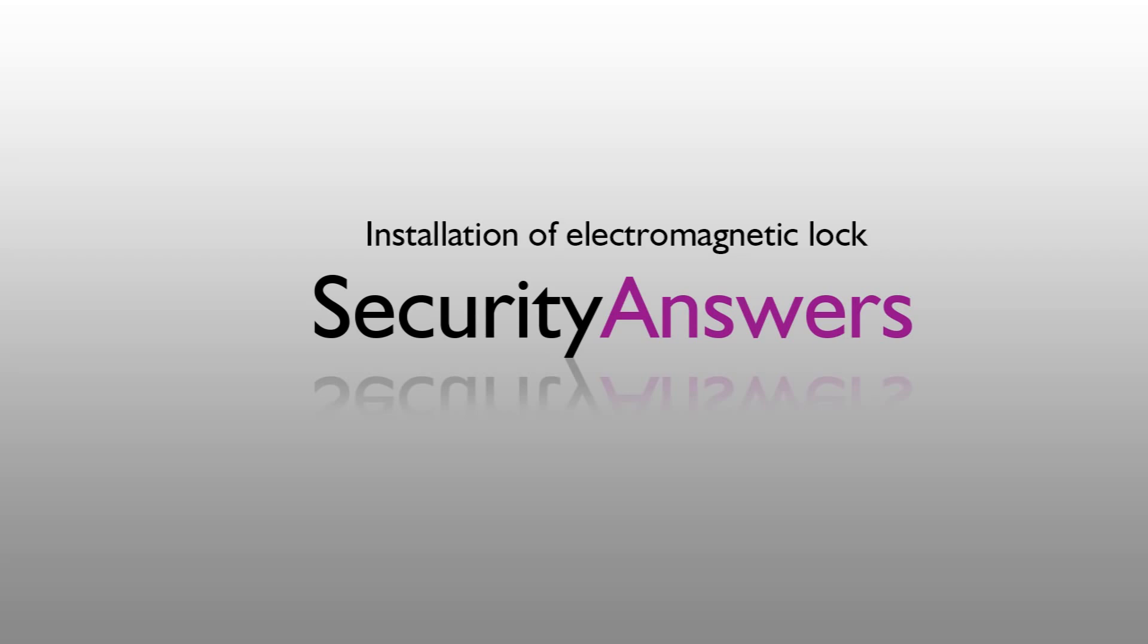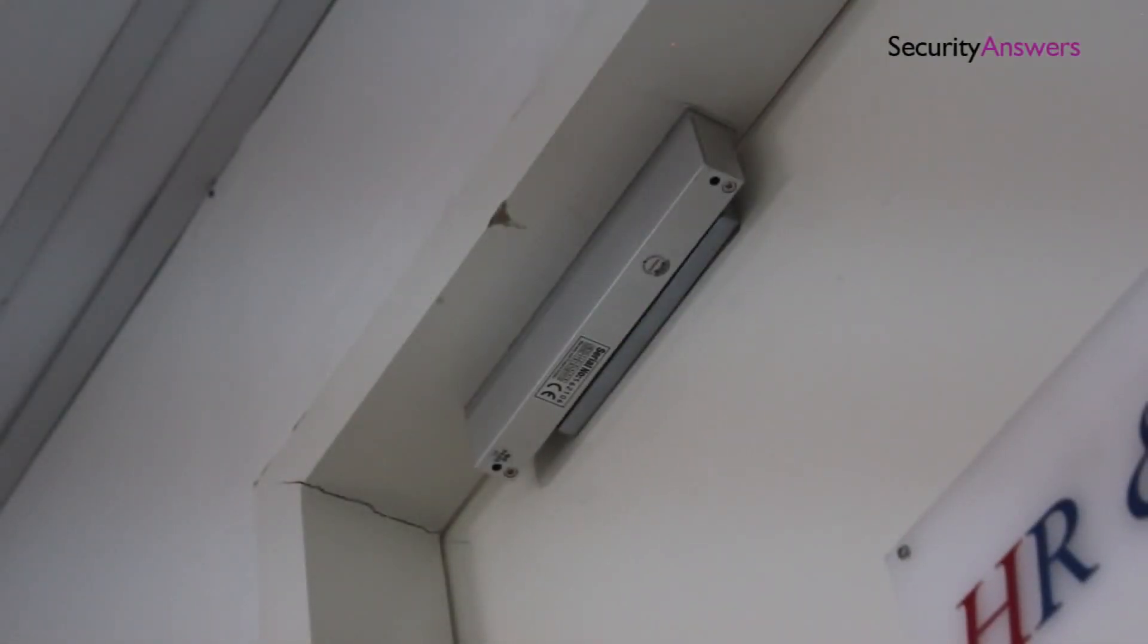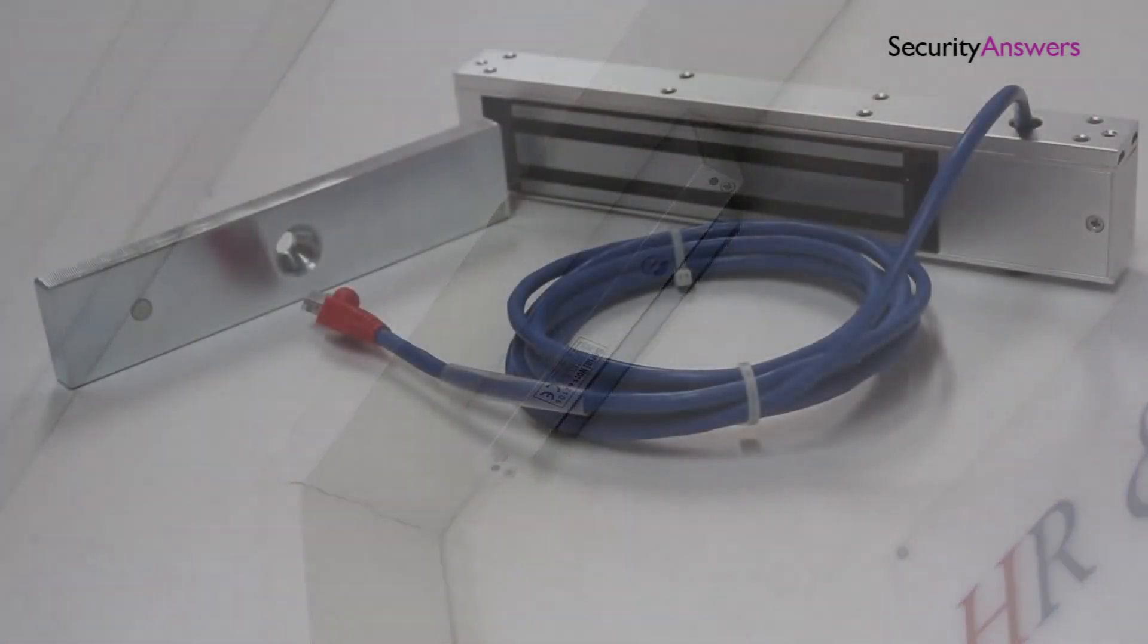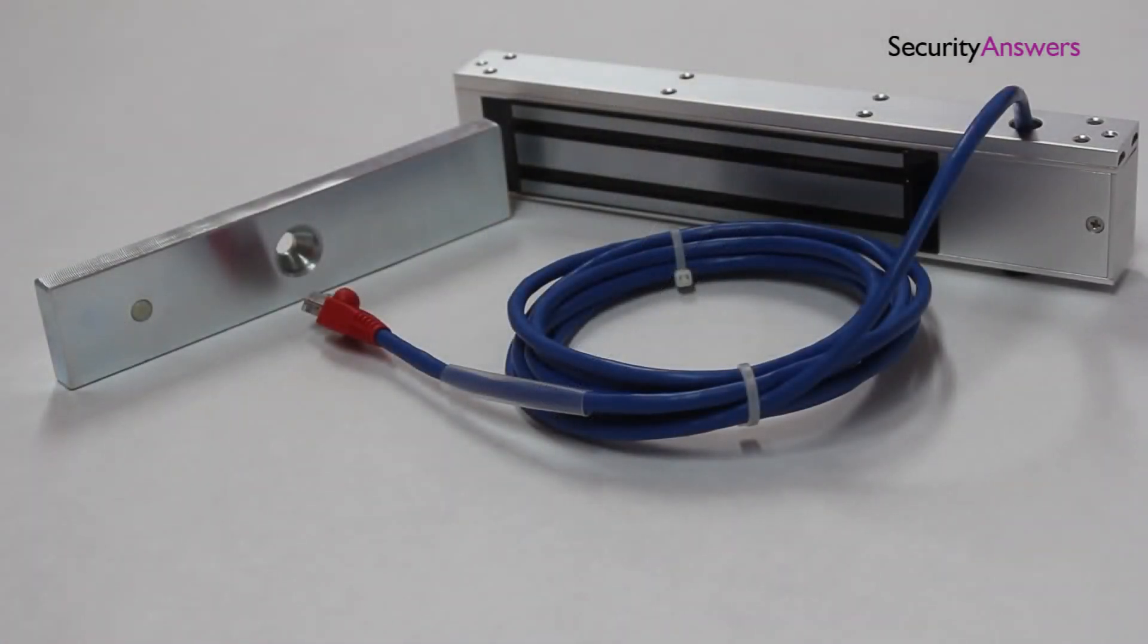In this video we will be going to look at how to install an electromagnetic lock to a door and doorframe of an access control system. We will be using an EM lock from AXS Pro.